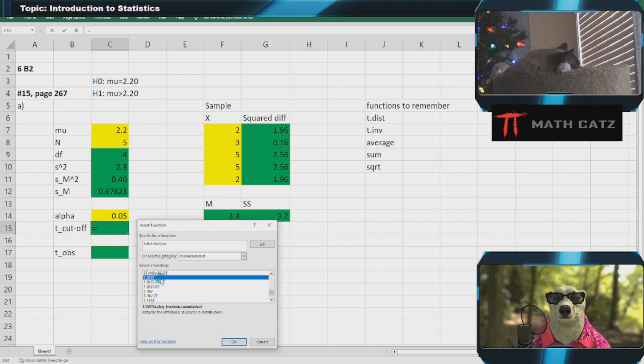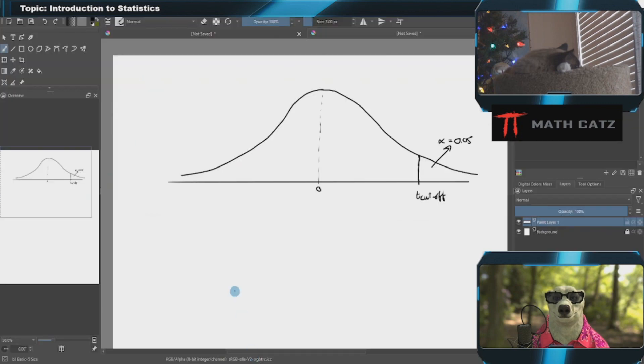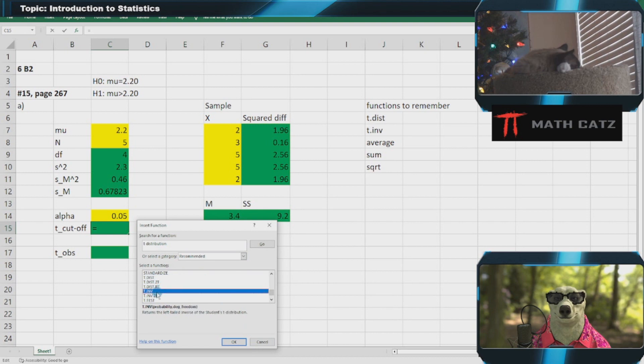However, the t distribution function is going to take a raw score and the degrees of freedom and give you the probability. That's not what we want. Alpha is our probability on the right. If 5% is on the right, then all of this is going to be 95% on the left.